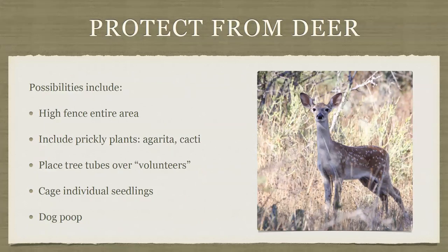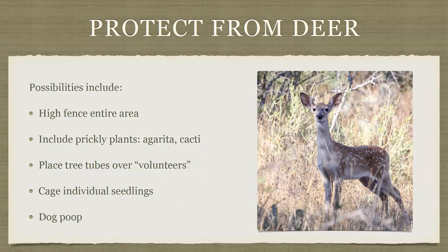Protecting from deer — if you live in our county you know this is an issue. I mentioned planting inside prickly plants like cenizo and agarita. One other thing we've found for trees way out in the field: you take a stick, you stick it in dog poop, and you make a little X on the trunk. The deer will not scrape and they will not nibble — they think it's disgusting, and it is for you, but only briefly. It lasts until the next rain. If you want to borrow something from my dogs, you're welcome.